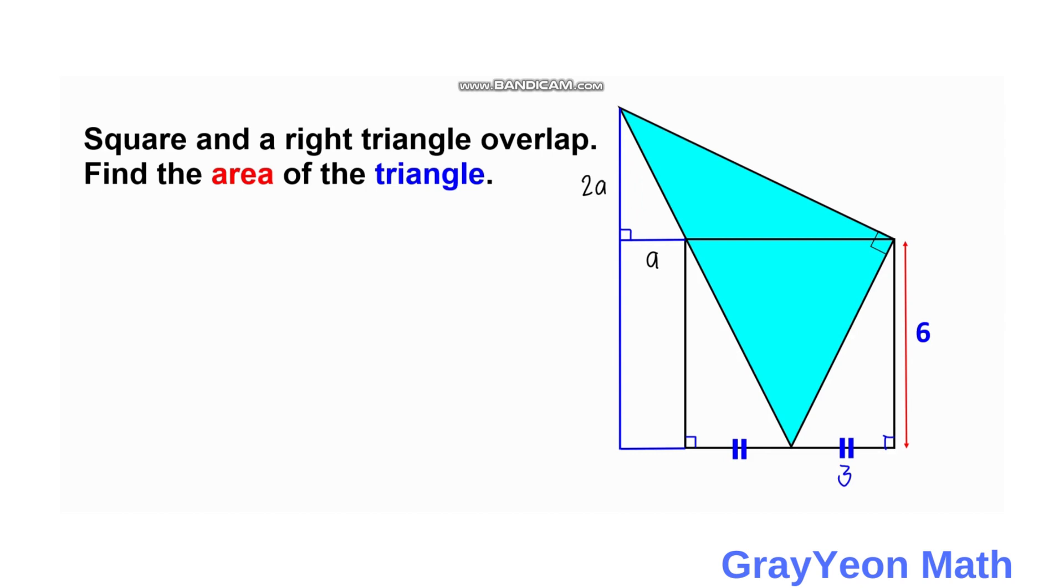Okay, so next is we draw a line from this point upwards. And from this point of the triangle to the right. And we actually form another right triangle.